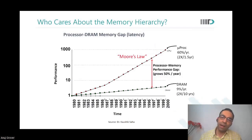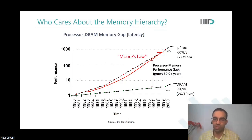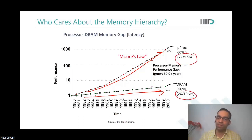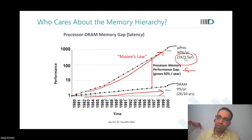Over the past many years, processor speed has increased largely exponentially at a very fast pace, whereas main memory speed has not increased at the same pace. It is also improving, but at a much lower pace — roughly 2x performance every one and a half years for processors, versus 2x over 10 years for DRAM. Because of this performance gap between processor and memory, we need to use caches.